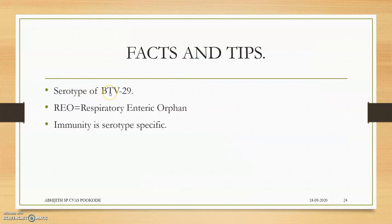Regarding serotypes of Blue Tongue: this is a big problem because some journals state 34 serotypes, but a relevant veterinary virology book mentions 29 serotypes, which is the number included here. Immunity is serotype specific, which is the main problem because new serotypes are continuously emerging and recognized.